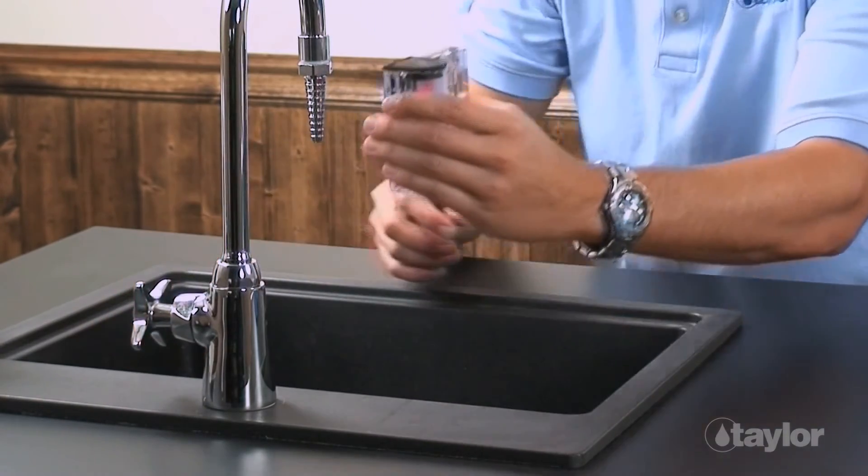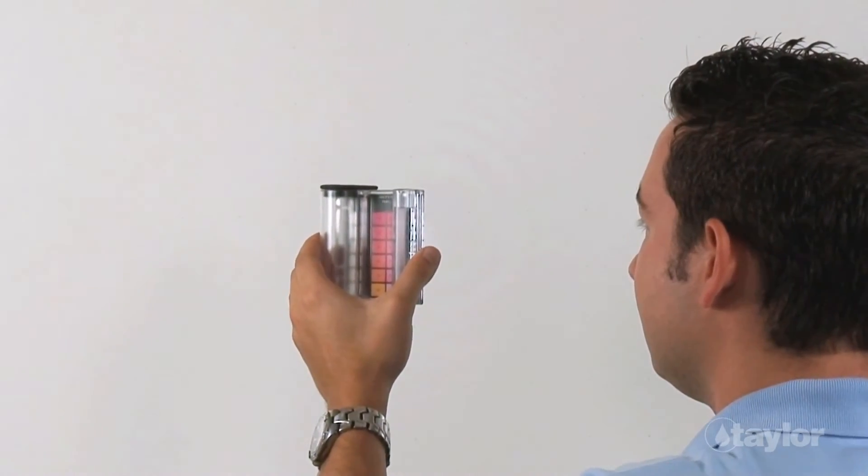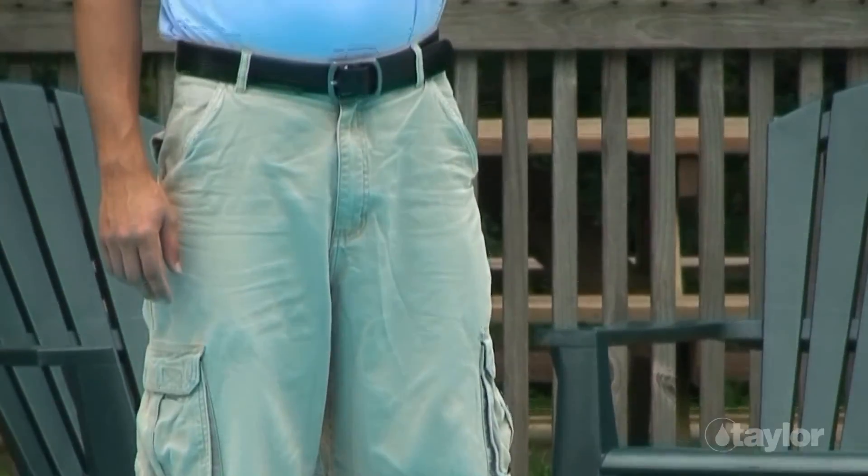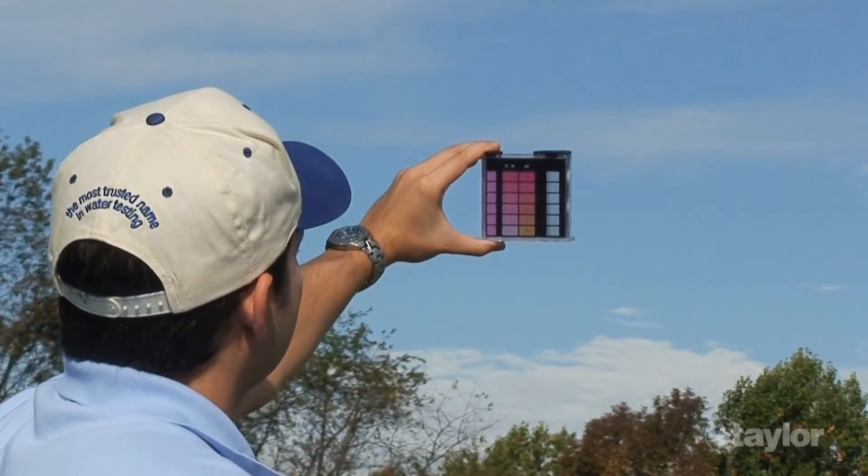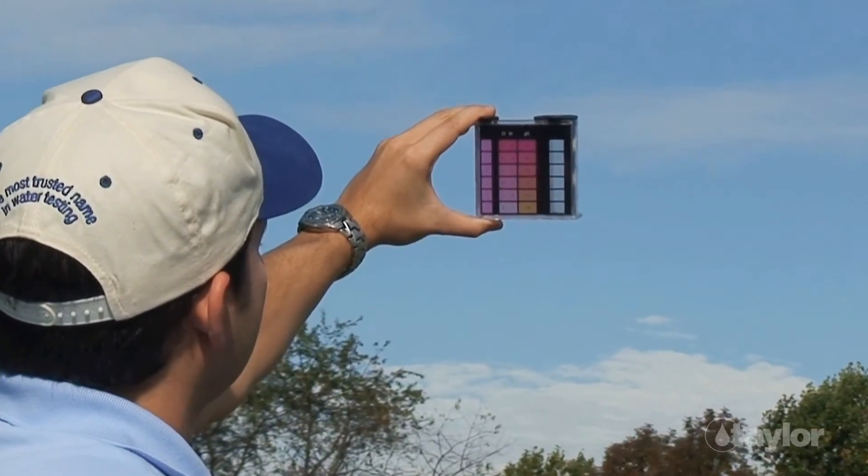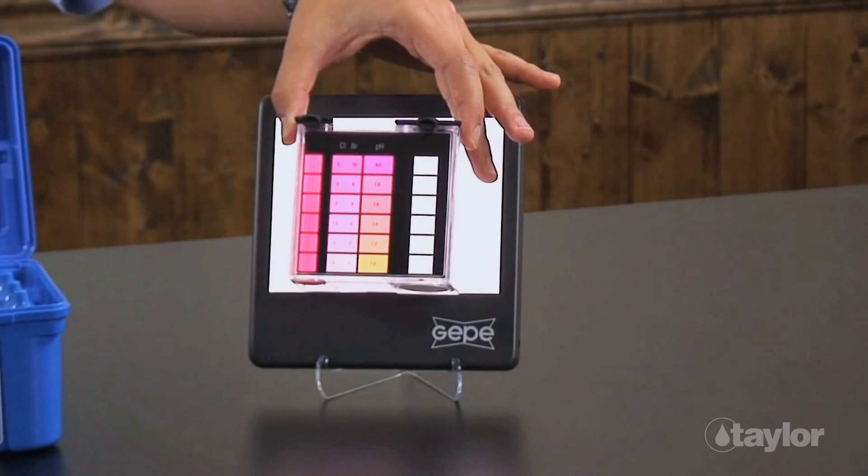Remember, color matching for the sanitizer and pH test should be conducted outdoors in natural northern light. When testing indoors, do these color matching tests with the aid of a daylight simulator.